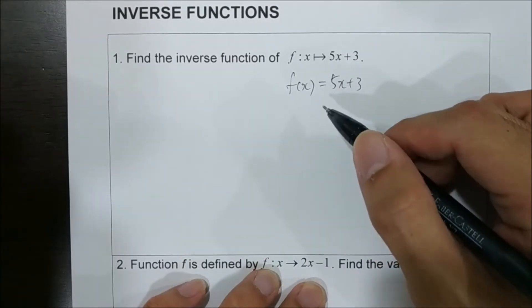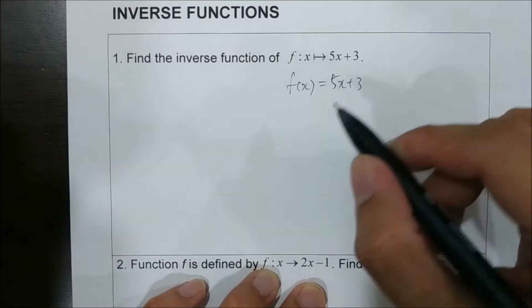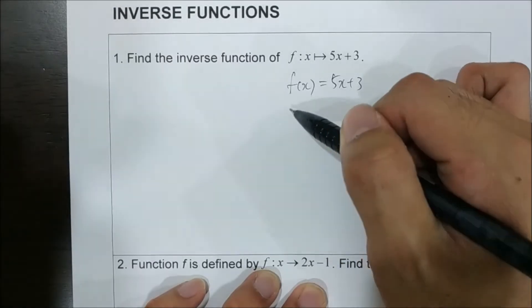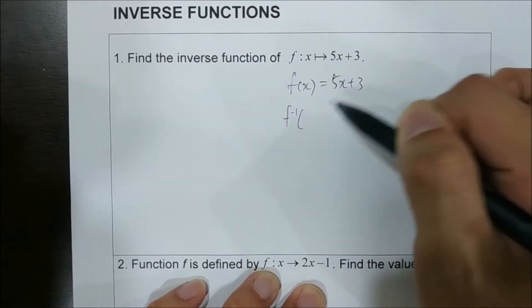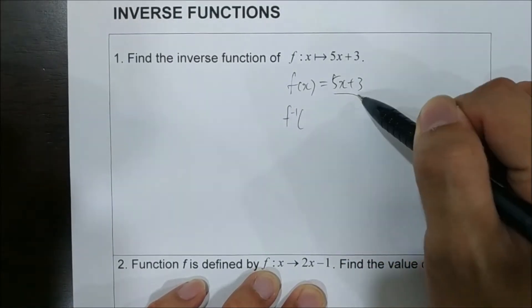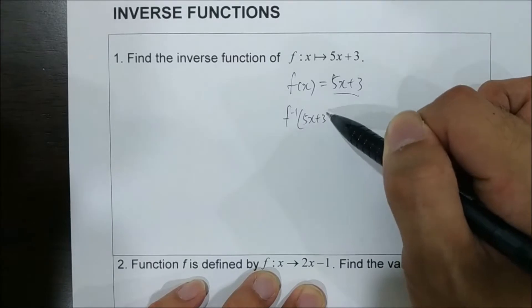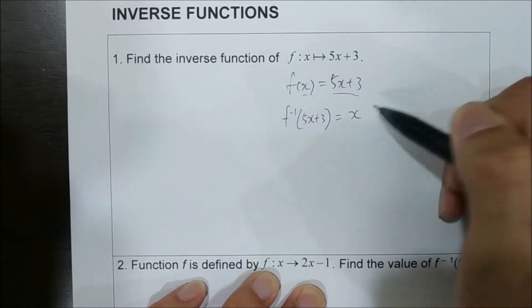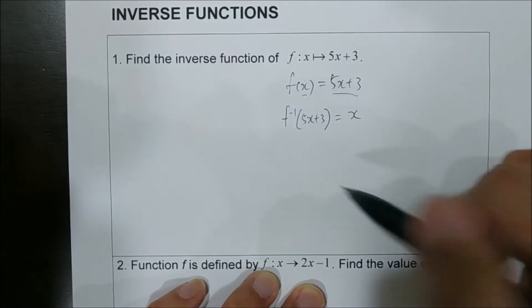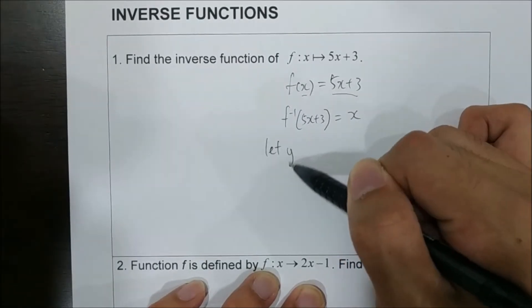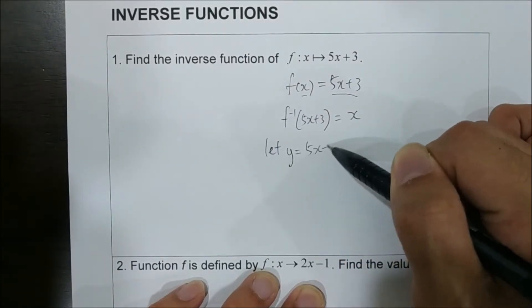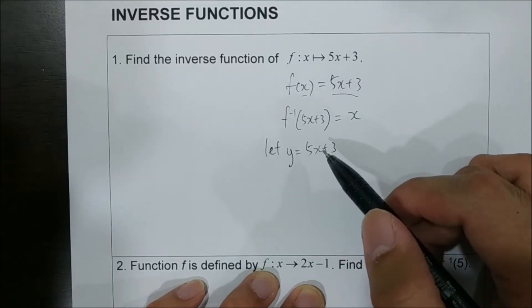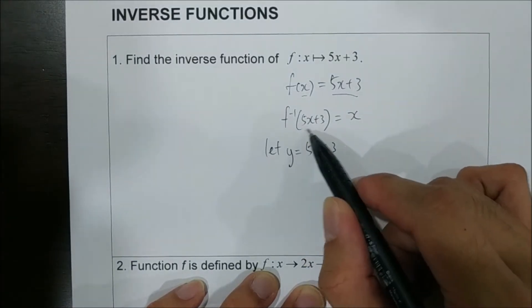To find the inverse function, first you need to know that if f(x) equals to 5x plus 3, then f inverse of this (5x plus 3) equals to x. So, we let y equals to 5x plus 3. When we want to find the inverse function, we always let y equal to this.